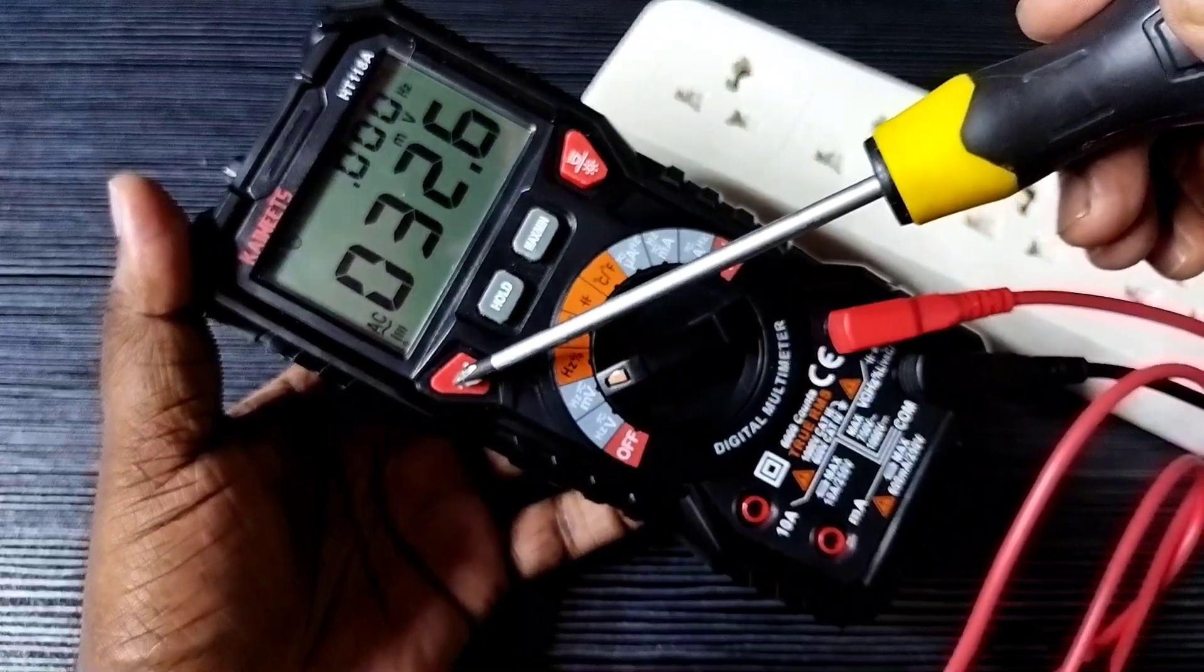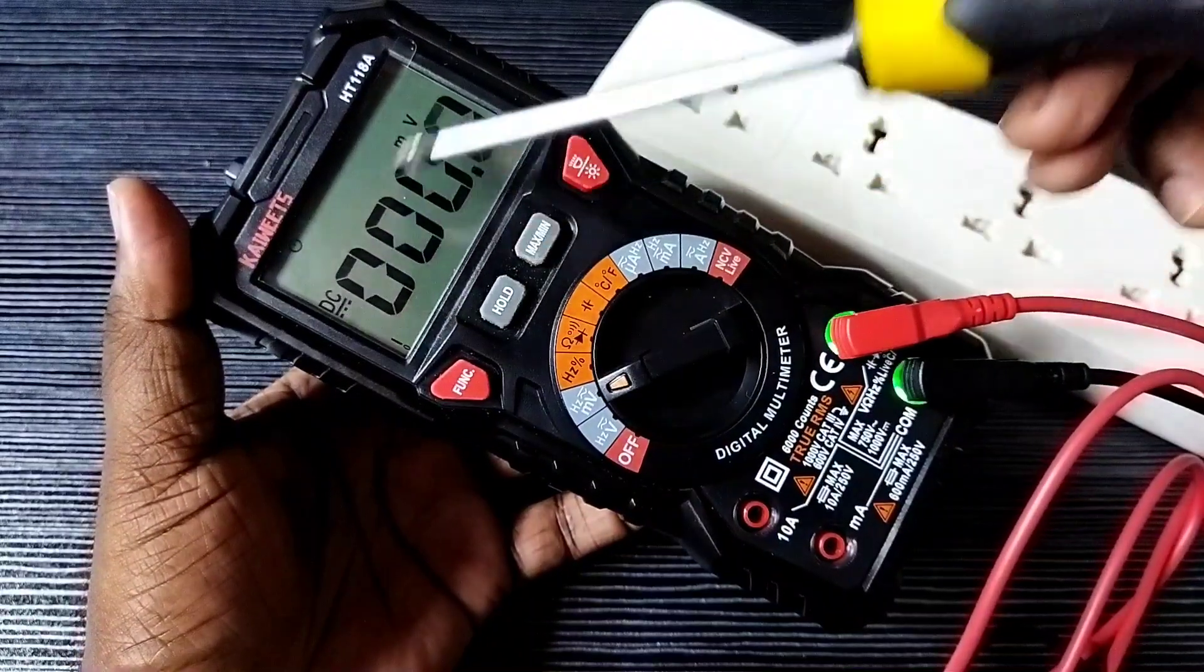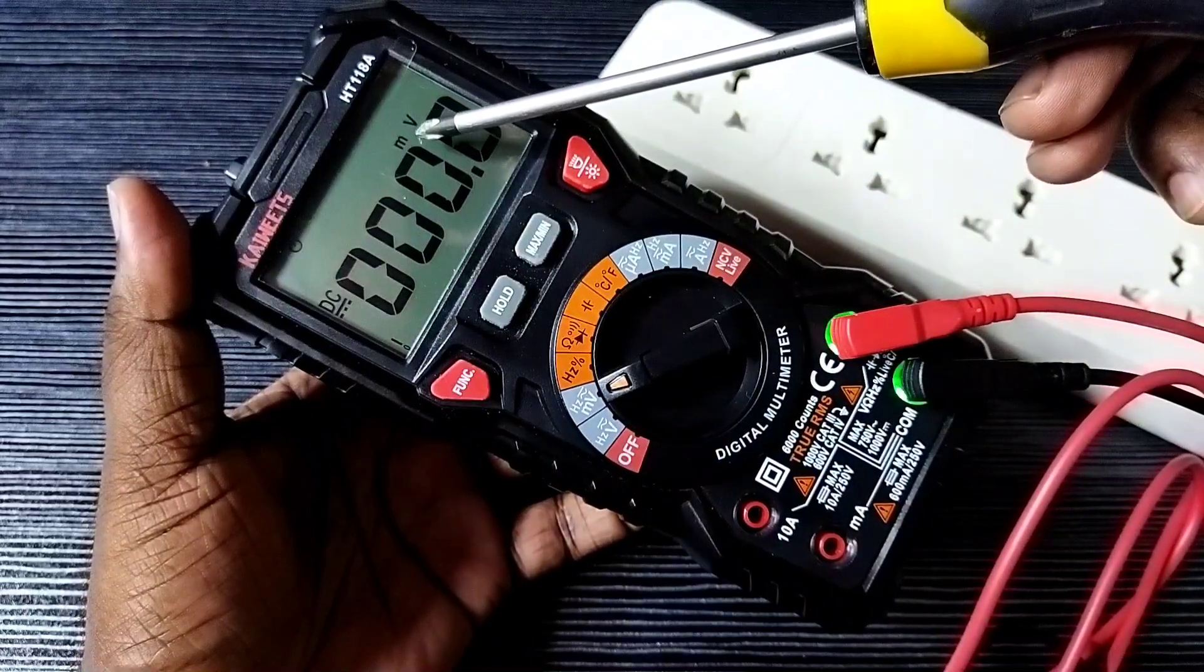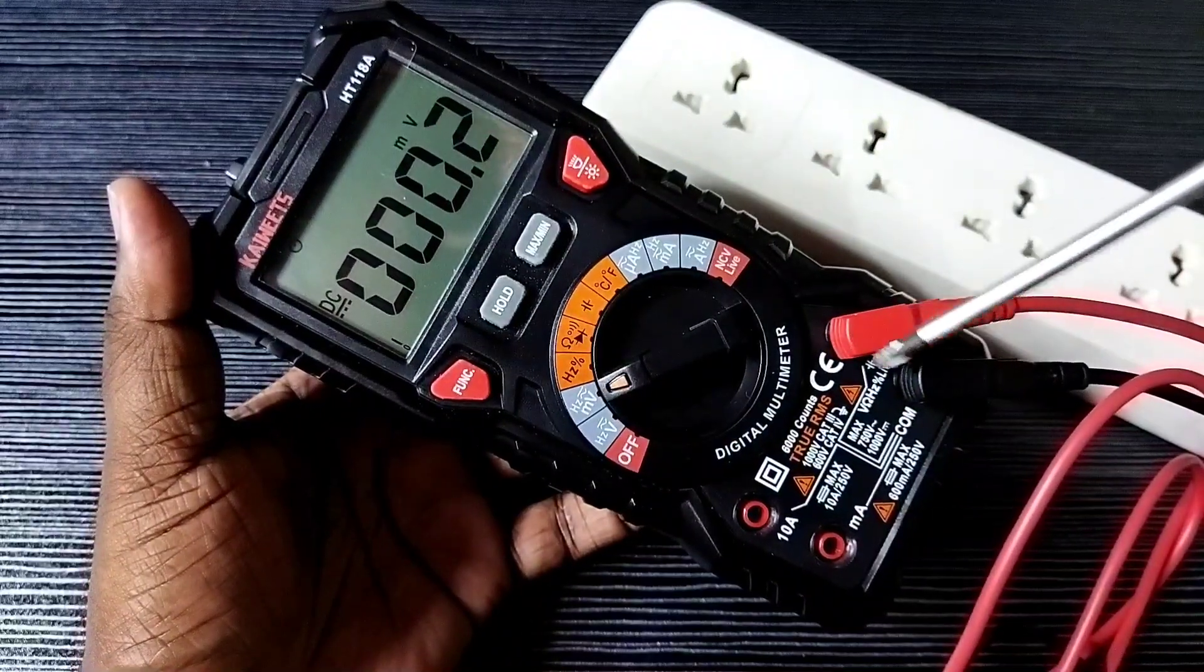So this way we can, using this function button, we can switch to AC or DC and measure AC or DC voltage in microvolt.